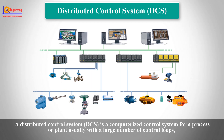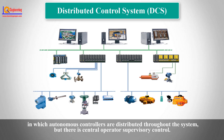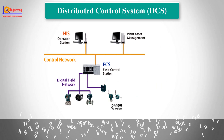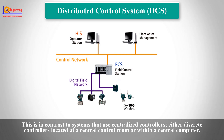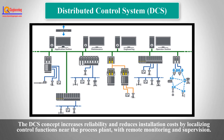A Distributed Control System is a computerized control system for a process or plant, usually with a large number of control loops, in which autonomous controllers are distributed throughout the system, but there is central operator supervisory control. This is in contrast to systems that use centralized controllers, either discrete controllers at a central control room or within a central computer. The DCS concept increases reliability and reduces installation cost by localizing control functions near the process plant, with remote monitoring and supervision.